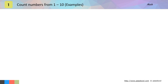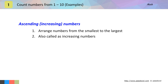Hi, in this video we will learn numbers and we will see a few more counting examples. We will learn about ascending and descending numbers. Arranging numbers in ascending order means you need to arrange numbers from smallest to the largest — that means you need to write the smaller number first and then bigger numbers. Ascending order is also called increasing order.